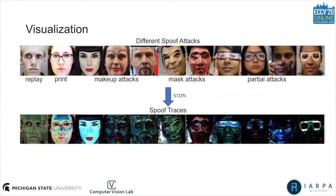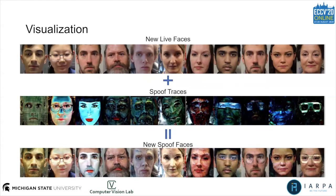Here we show some examples of the disentangling results. The model can work on many different attacks, such as print, replay, 3D mask, makeup, and partial attacks. In addition, the spoof trace can be utilized to synthesize new spoofs, which can further be used for training. This helps to increase the variation of spoof types that have only a few samples. The proposed approach can also generate more realistic and effective spoof samples than previous data augmentation methods such as warping, cropping, or brightness change.